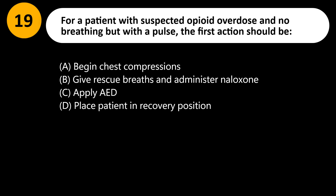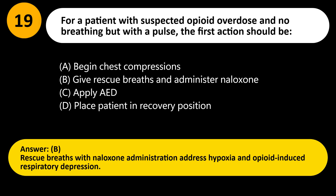For a patient with suspected opioid overdose and no breathing but with a pulse, the first action should be: A) Begin chest compressions, B) Give rescue breaths and administer naloxone, C) Apply AED, D) Place patient in recovery position. Answer: B. Rescue breaths with naloxone administration address hypoxia and opioid-induced respiratory depression.